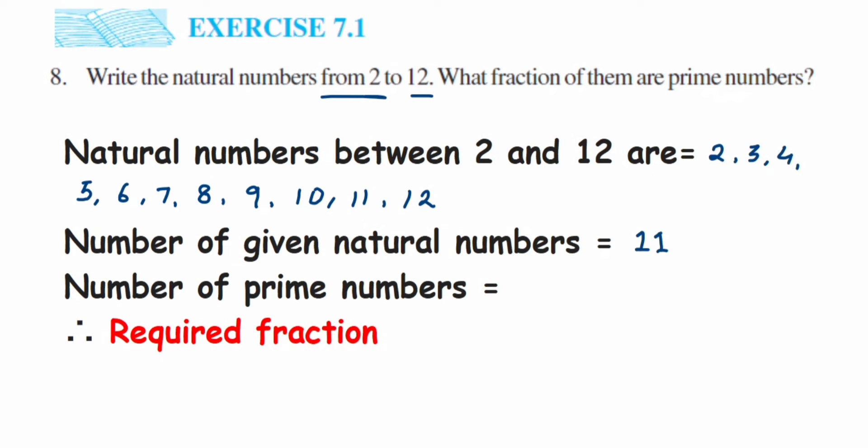The prime numbers are the ones which don't go in any table except itself and the one table. So the first prime number will be 2 because 2 doesn't go in any table except itself and 1. So 2, 3, and then we have 5.